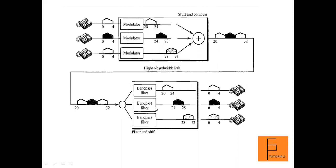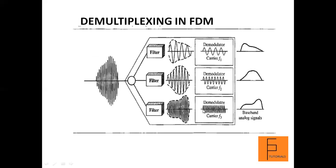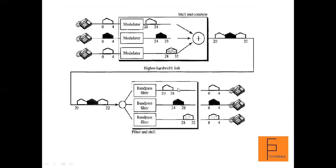At the receiving end, band pass filters are used. Each filter accepts the composite signal and filters out its constituent component signals. The first band pass filter filters out only frequencies from 20 to 24 kHz. The second band pass filter filters out only those frequencies between 24 to 28 kHz. The third band pass filter filters out only those frequencies between 28 and 32 kHz. Each filtered signal is then passed through a demodulator.